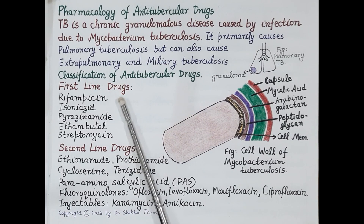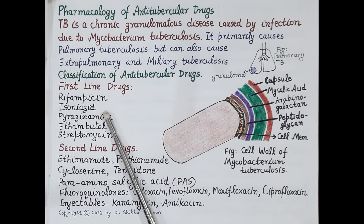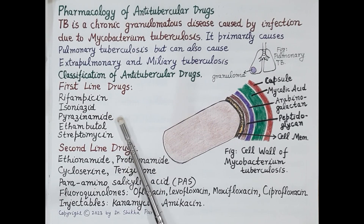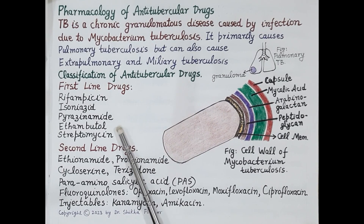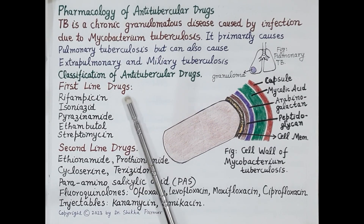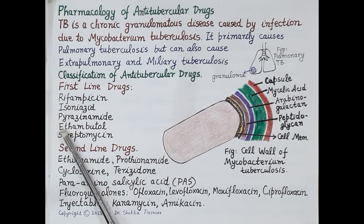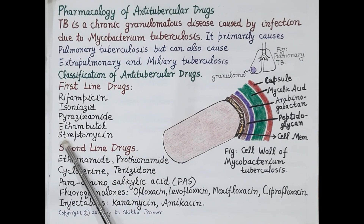First-line drugs are rifampicin (also called rifampin), isoniazid, pyrazinamide, ethambutol, and streptomycin. You can remember these drugs by the mnemonic RIPES.